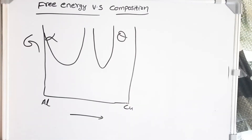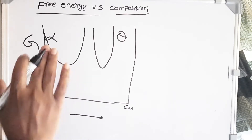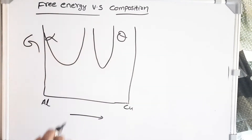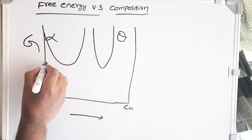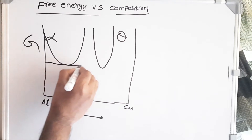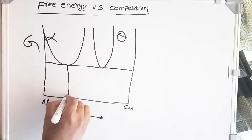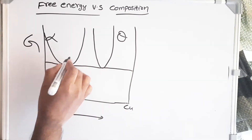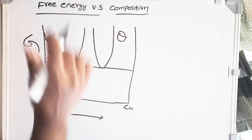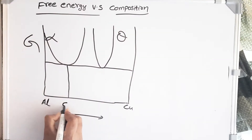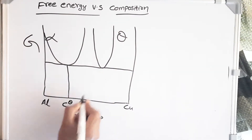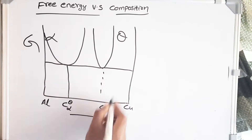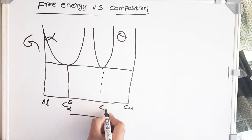We draw free energy versus composition diagrams. This curve is for the free energy of alpha and this is for the free energy of the theta precipitate. The common tangent between these two gives the equilibrium compositions. This point gives us the composition of alpha in equilibrium with theta, and this point gives us the composition of theta in equilibrium with alpha.